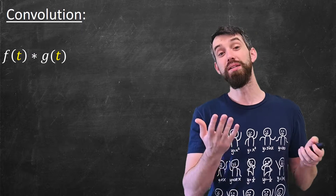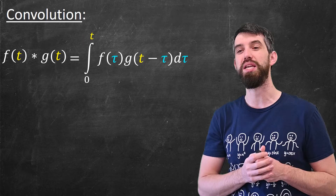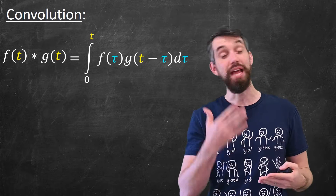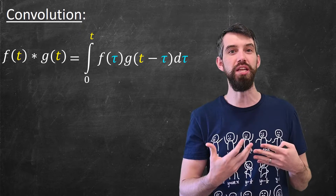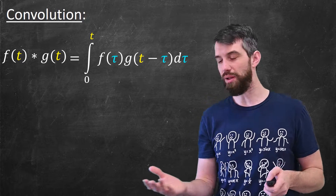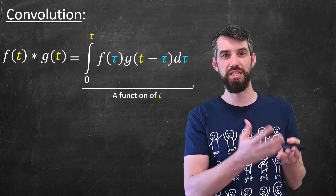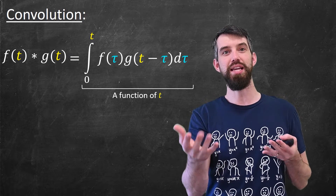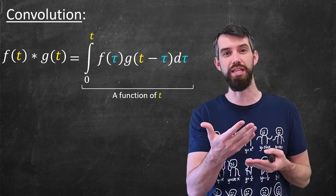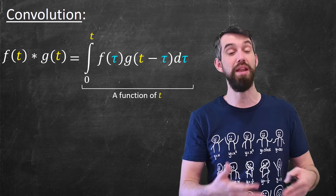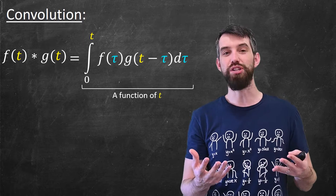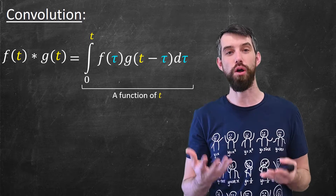The way this is defined might seem at first kind of weird. It's defined to be this particular integral: the integral from 0 up to t of f of tau — tau being a dummy variable of integration — times g of t minus tau, all integrated with respect to tau. If I look at this right-hand side, all of this together is just some function of t. The tau's are integrated out, and t appears inside the g and also in the limit of integration. As long as f and g are actually able to be integrated, we have this nice object called the convolution.